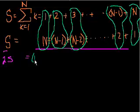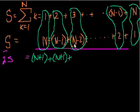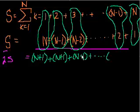What's 1 plus N? Well, that's just N plus 1, right? What's 2 plus N minus 1? Well, that's also N plus 1, right? What's 3 plus N minus 2? I think you could guess. It's N plus 1. And we just keep doing that. And what's N minus 1 plus 2? N plus 1. And what's N plus 1? Well, that's just N plus 1, of course.